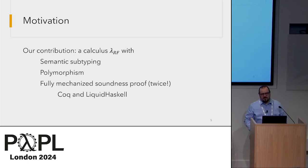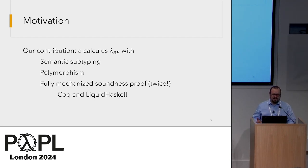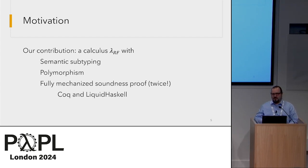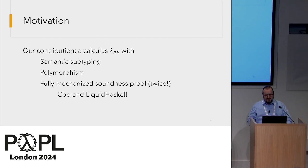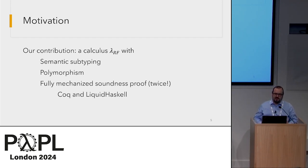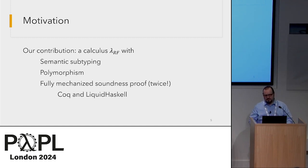In this paper, our contribution is to introduce a calculus we call Lambda RF, that combines semantic subtyping with parametric polymorphism. We've also supplied for our metatheory two fully mechanized proofs, one in Coq and one in Liquid Haskell.